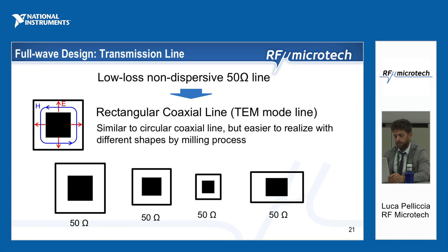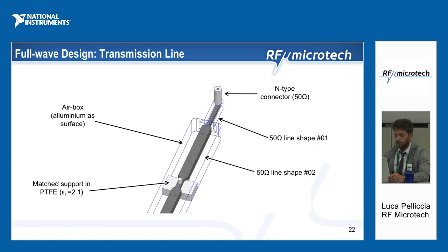You can see below some different possible shapes of this coaxial line with the same characteristic impedance. In this picture you can see the interconnection between different sections of the transmission line having the same characteristic impedance but different geometries. In particular, you can see the N-type connector with an impedance of 50 ohms connected to the 50-ohm line with a shape called number one, which is smaller and has similar dimensions compared to the connector.